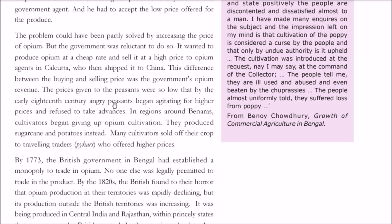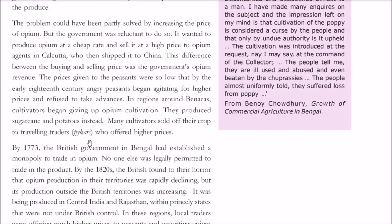Angry peasants who were not receiving fair payment refused to take advances. In places like Benares, they stopped growing opium altogether and produced sugarcane and potatoes instead, sometimes selling their crops to traveling traders called piecars who offered higher prices.